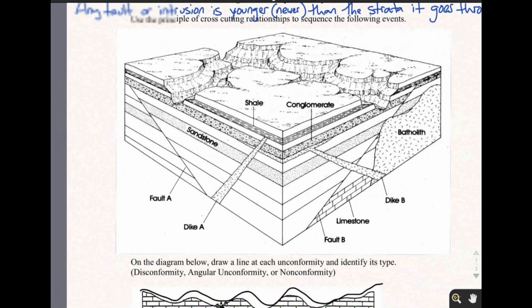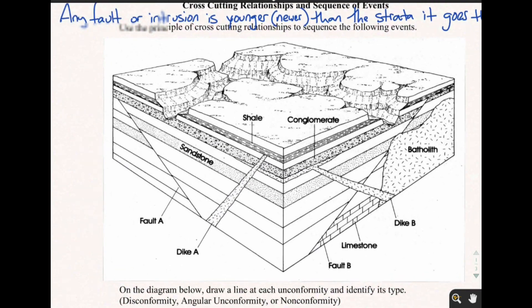So just like any of the other problems that we worked with, you need to start at the bottom. And the very first thing that happened in this diagram is the limestone. Why is the limestone here the very first thing? Because everything is either on top of it or goes through it. So it is the very first thing. Superposition says we're going to start at the bottom. Limestone's the very bottom.